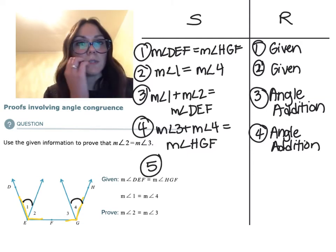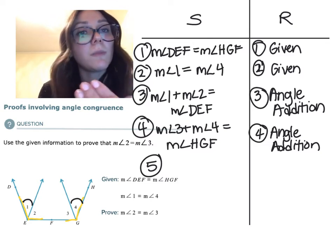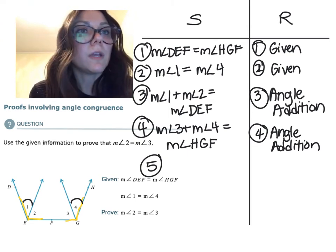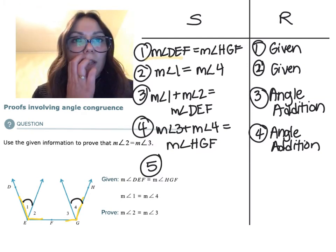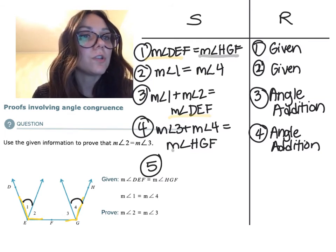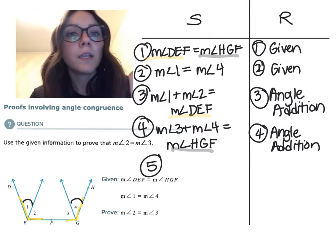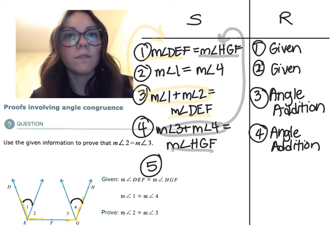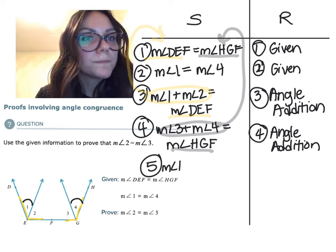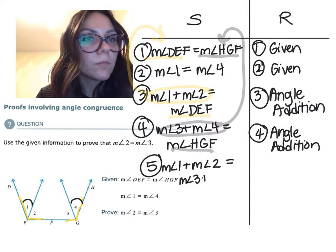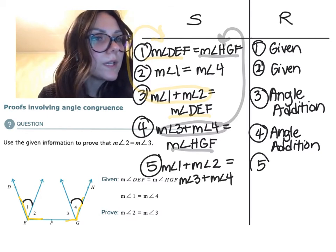Okay, now we've made some statements. Let's relate one of the given statements with what we just wrote. One of the given statements was that the measure of angle DEF equals the measure of angle HGF. Well, I see DEF again, and I also see HGF twice. So we can substitute DEF's equivalent expression in here and HGF's equivalent expression in here. Then we would have the statement measure of angle one plus measure of angle two equals measure of angle three plus measure of angle four. Anytime we replace that's substitution.